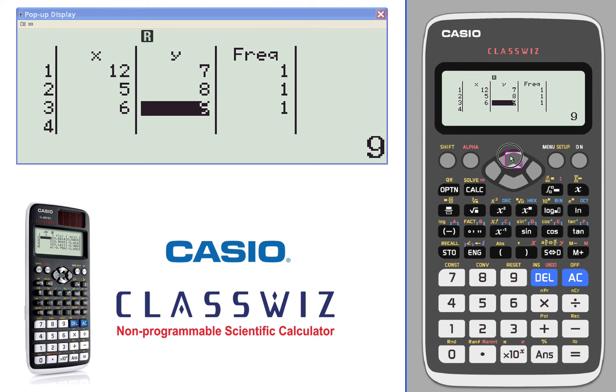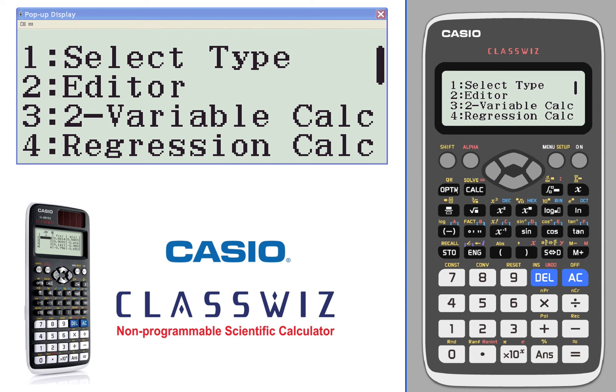You also have a frequency column that comes up. You can toggle that on or off. Go into your options. We can calculate the regression.